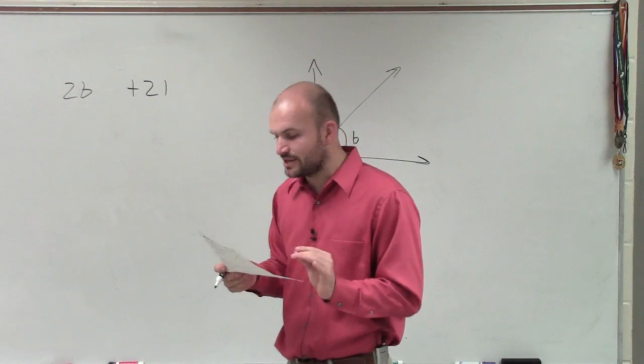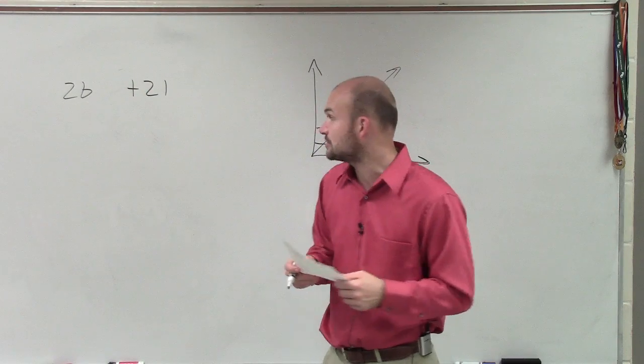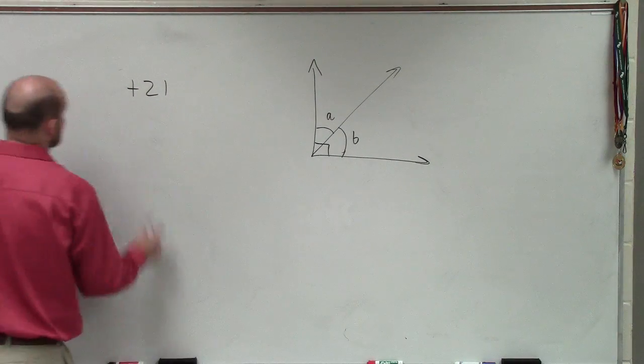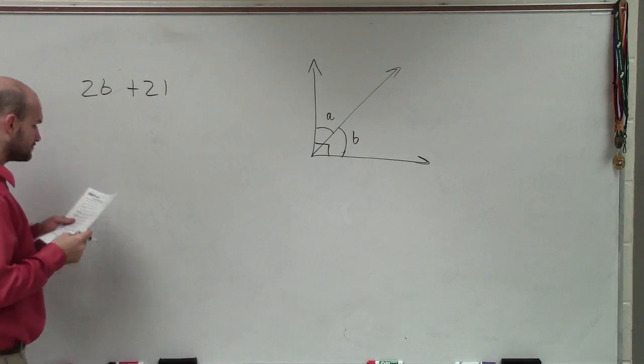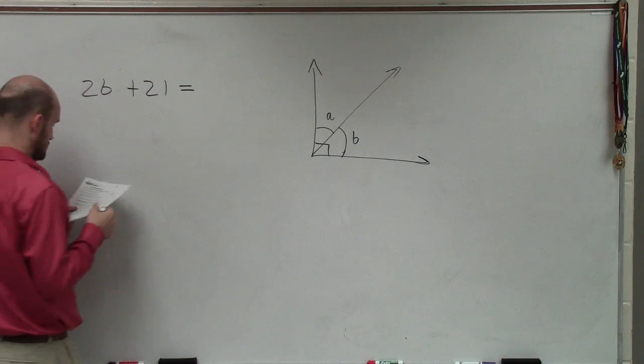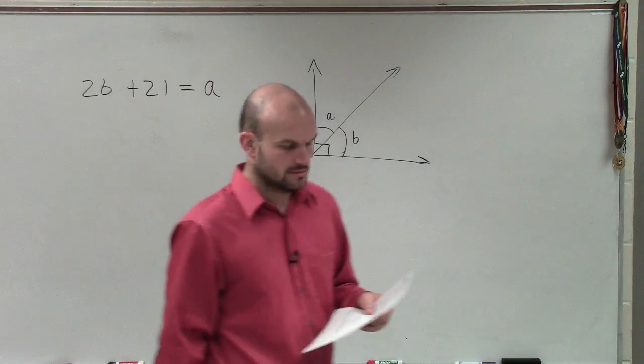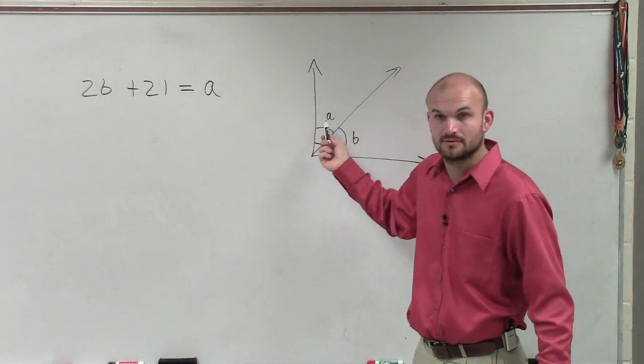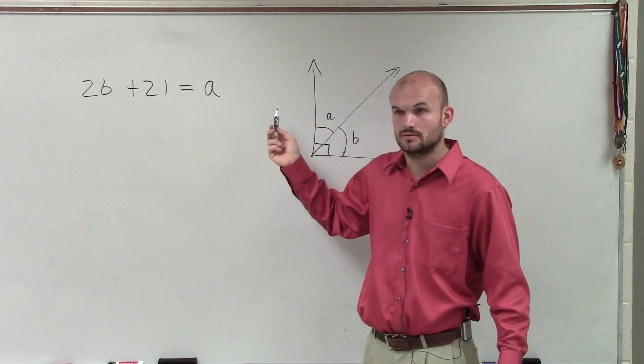So it says two angles are complementary. The measure of one angle is 21 more than twice the measure of the other angle. So I have 2B plus 21 equals A, equals the other angle. Right? Here's one angle. Here's A.